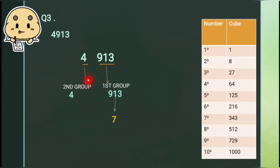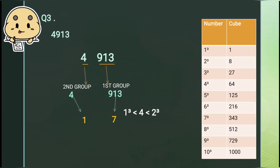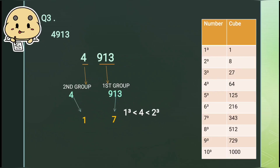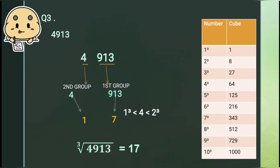Now we will look at the second group, which gives us the tens digit. Here we have 4. We know that 1 cubed is equal to 1 and 2 cubed is equal to 8. So 1 cubed is smaller than 4, and 2 cubed is greater than 4. So we will take the smaller one, which is 1. Therefore the cube root of 4913 is 17.